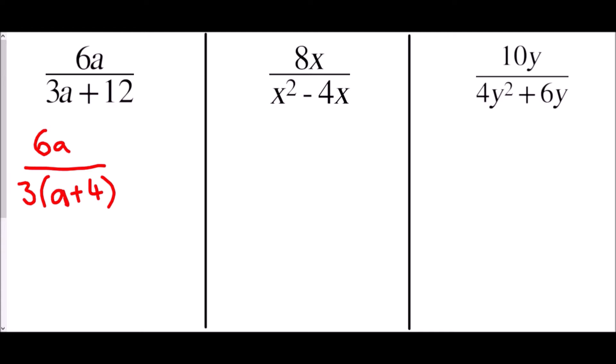Now do we have a common factor we can cancel out? We've got a 3 at the front of the denominator — does 3 go into the top? It does. So we divide the top and bottom by 3, giving us 2a over (a + 4). And we've simplified that fraction because now we have smaller terms in all cases.